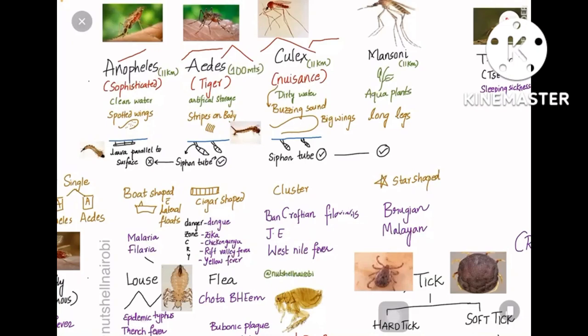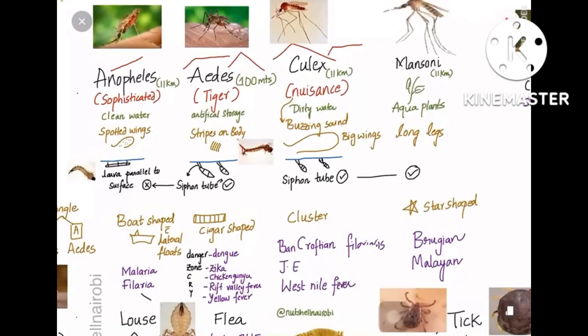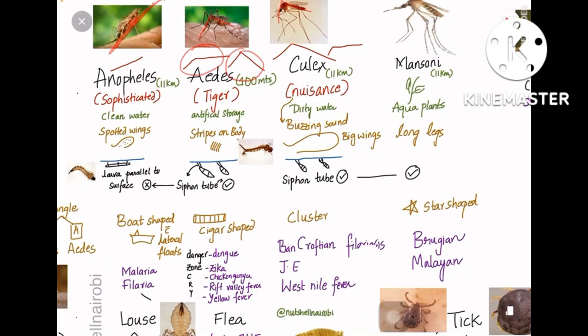Four types of mosquitoes are Anopheles, Aedes, Culex, and Mansonia. The line diagrams show the position of mosquitoes when they stand on a surface. Anopheles is a sophisticated mosquito — it stands at a 45-degree inclination, whereas Aedes and Culex both have a hunchback or parallel-to-surface appearance. Anopheles is called the sophisticated mosquito, whereas Aedes is called the tiger mosquito because of the stripes on its body.